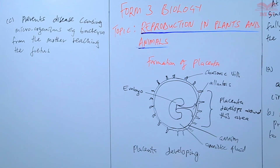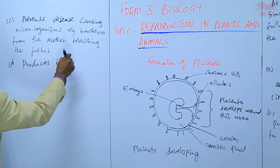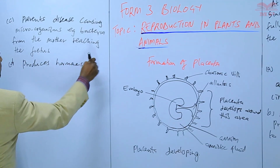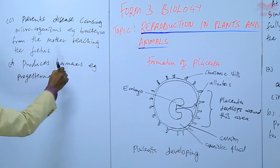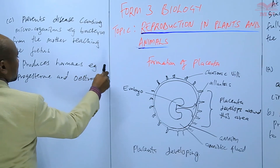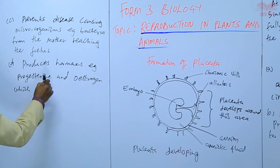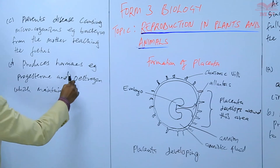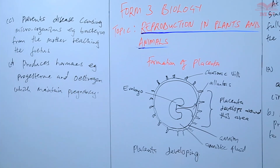Another role of the placenta is that it produces hormones. For example, there is progesterone and oestrogen. These are the hormones which maintain pregnancy. So all those are functions of the placenta.